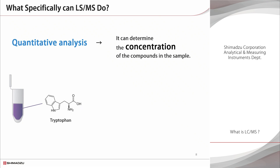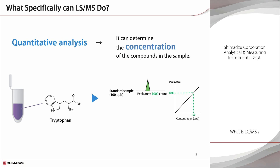In addition, with LC-MS, the concentrations of the compounds in the sample can be determined. For example, if you wish to know the concentration of tryptophan in the sample: first, measure a standard tryptophan sample and create a calibration curve. Then, measure the unknown sample whose concentration you wish to know, and determine the concentration from the calibration curve.